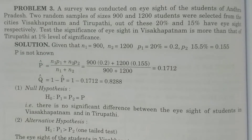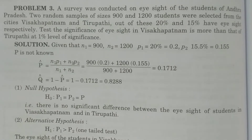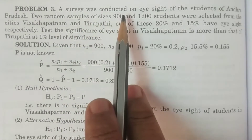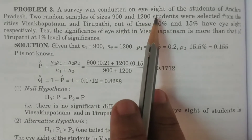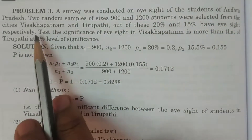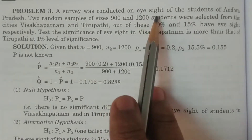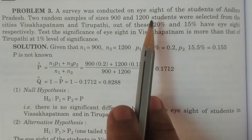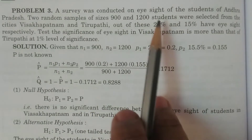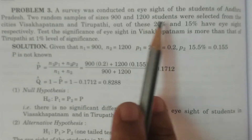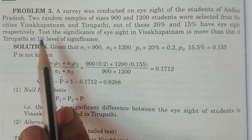Welcome to BSE Statistics students. Test for proportions. A survey was conducted on eyesight of the students of Andhra Pradesh. Two random samples of sizes 900 and 1200 students were selected from the cities.